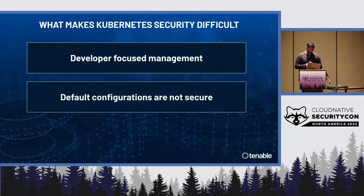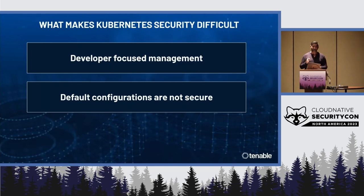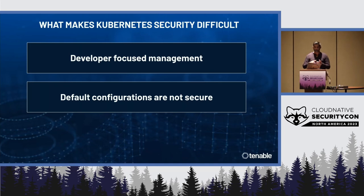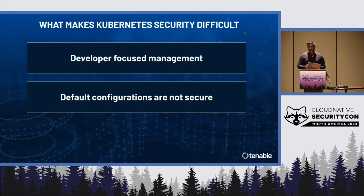Second is: default configurations are not secure. Before you throw tomatoes at me — Kubernetes has a very good security system built in. My point is it's not turned on by default in most cases, and that's the problem. Default configuration drives a certain kind of behavior. Kubernetes is built for speed, performance, and scalability — that's why it has the defaults it has. Every level in the Kubernetes architecture has the levers and controls built in for security, but developers often go with what's given by default, and that's generally not good enough.